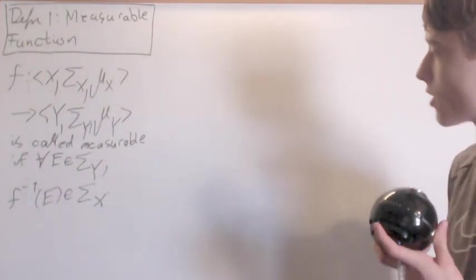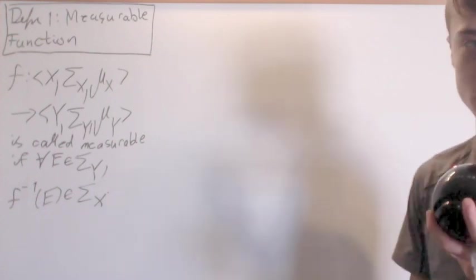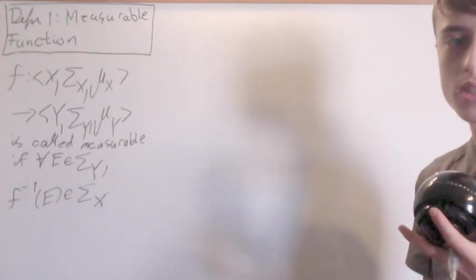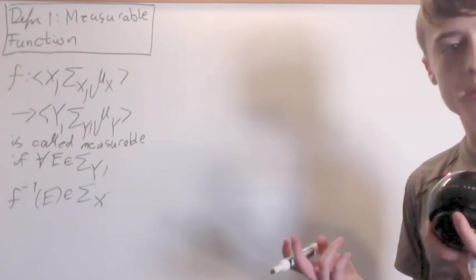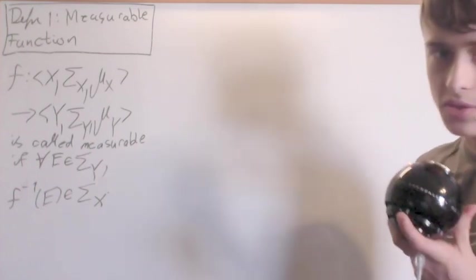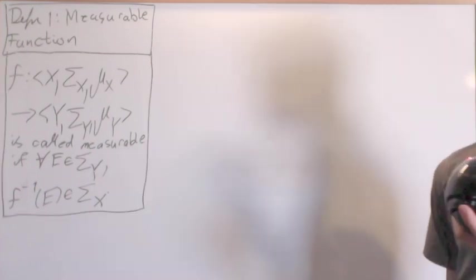So, the pre-images of measurable sets are measurable. Just as in topology, the pre-images of open sets are open and continuous functions.